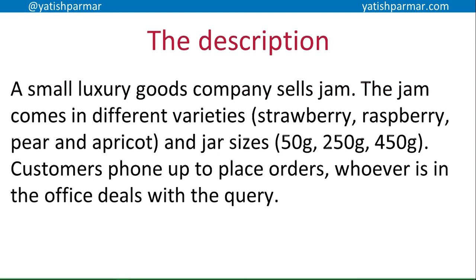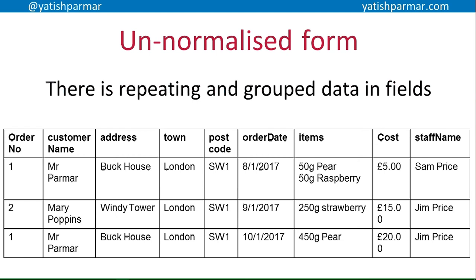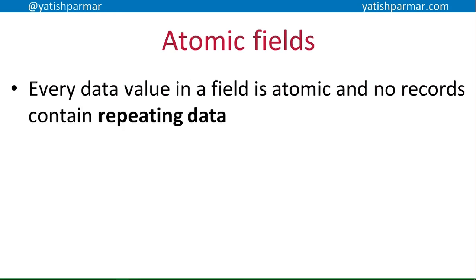Here's a little description. I've got a small luxury goods company that sells jam — different flavors and different jar sizes. Customers phone up to place orders and whoever's in the office deals with the query. In unnormalized form, if you put some practice data into the table to see what it looks like, you can see there's repeating group data in the different fields — for example, London, London, London. And we've got group data in the items field, which are also repeating. We want to focus on making what we call atomic fields, where every data value in a field should be atomic and no records should contain repeating data.